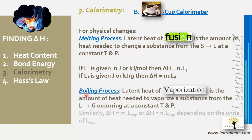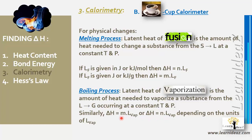Similarly, the latent heat of vaporization is the heat needed to vaporize a substance from liquid to gas at constant temperature and pressure. If given per mole: delta h = n × L_v. If given per gram: delta h = m × L_v.